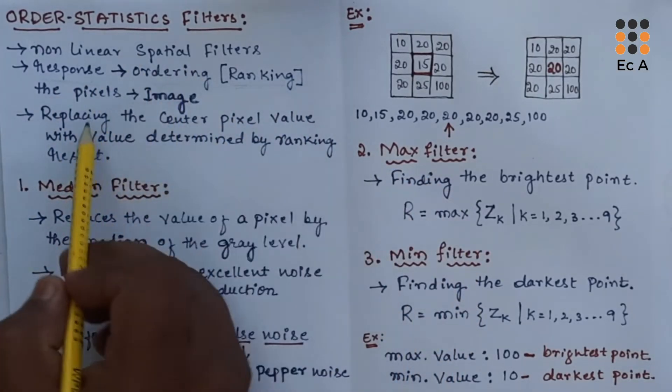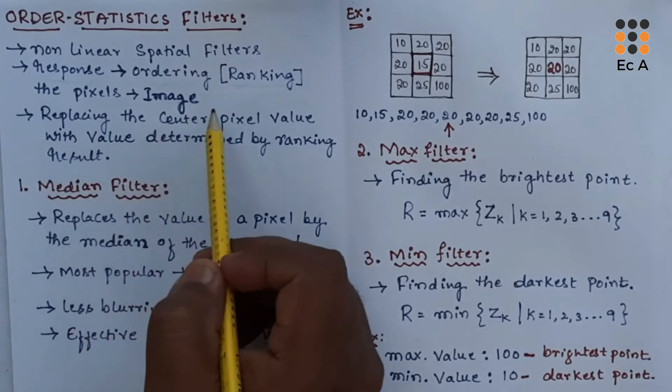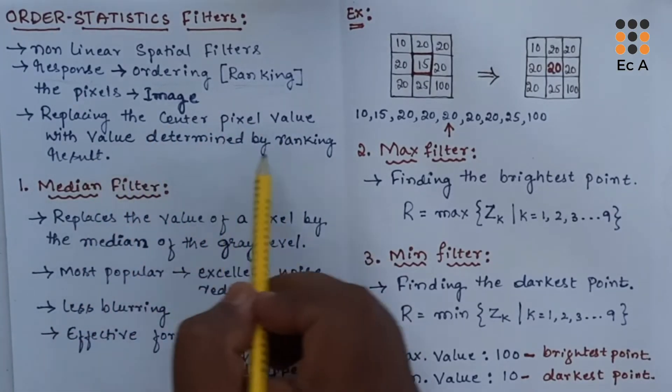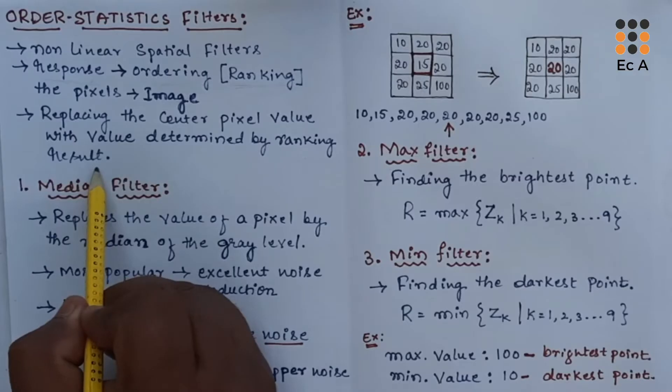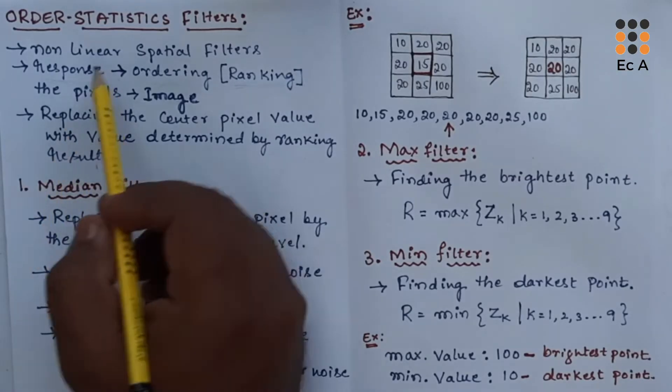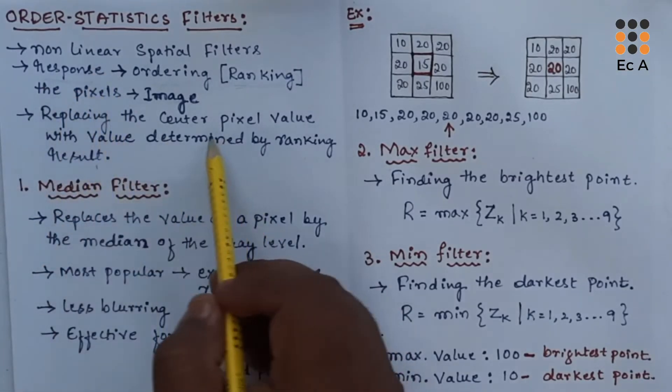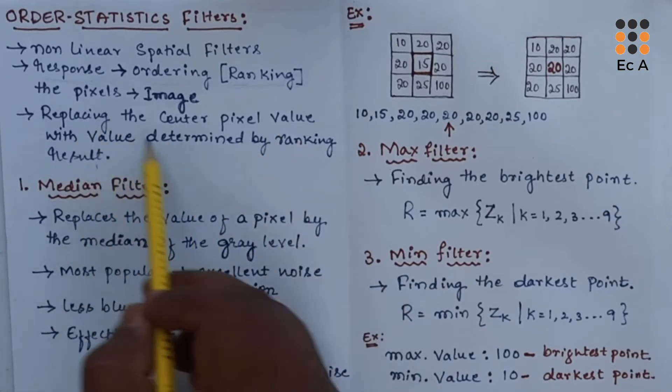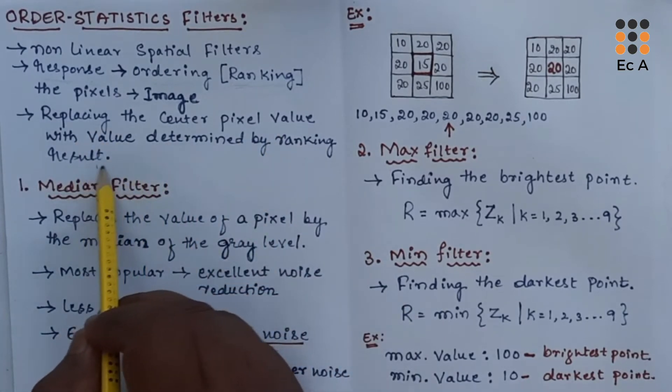These filters replace the value of the center pixel with the value determined by the ranking result. Once the filter produces the response, the center pixel value is replaced with the value of the result.